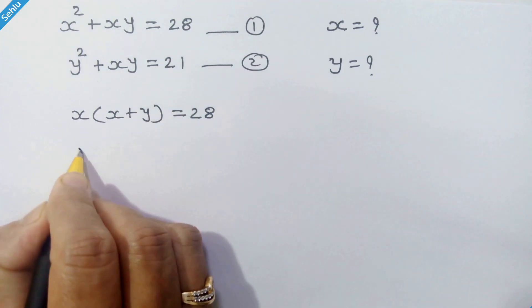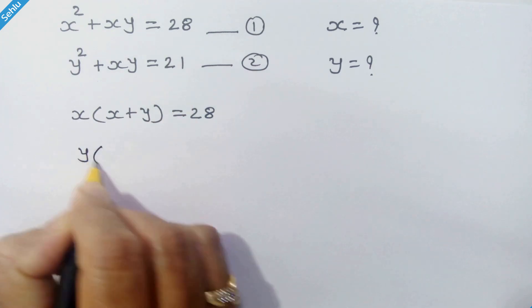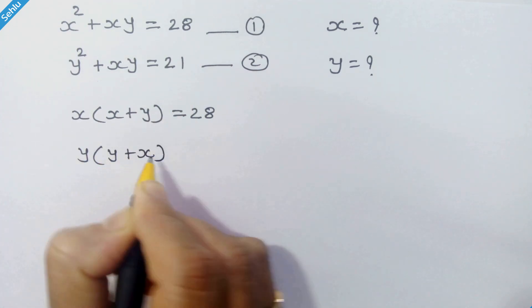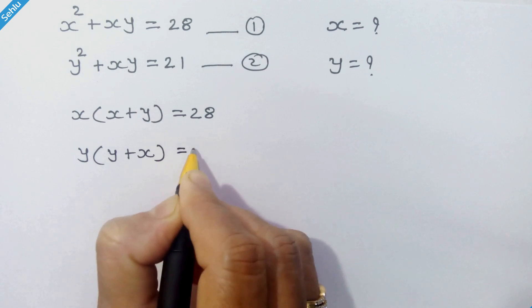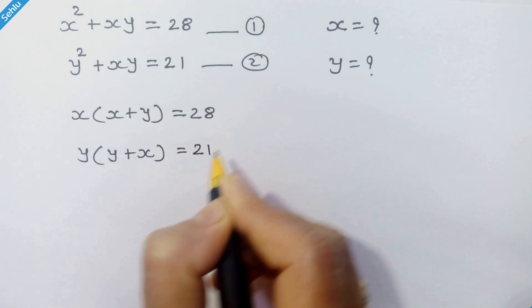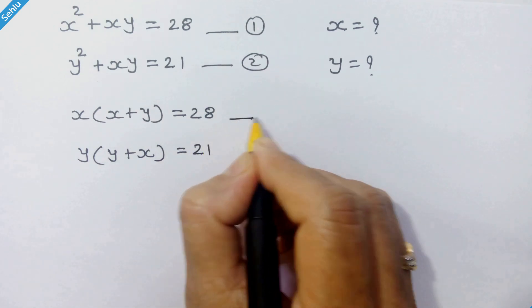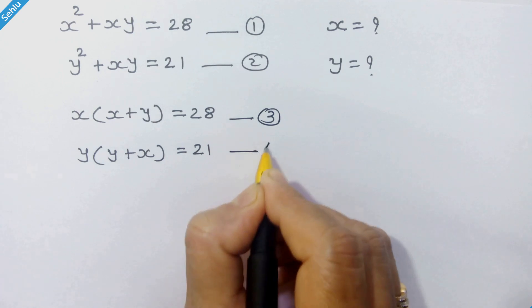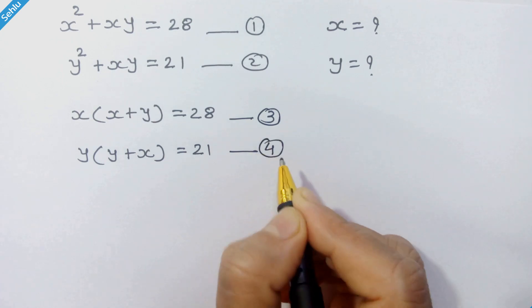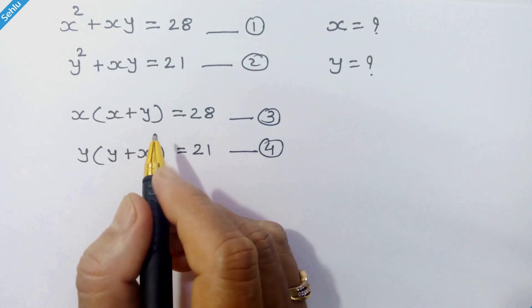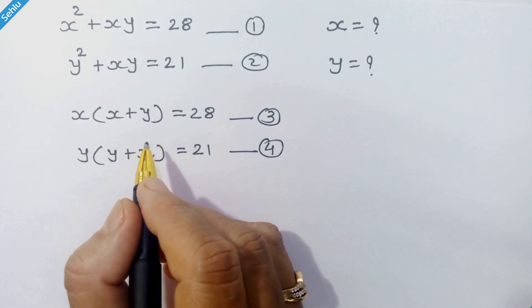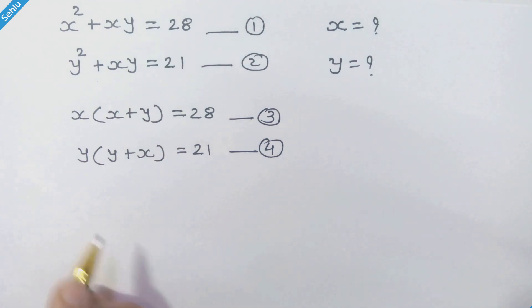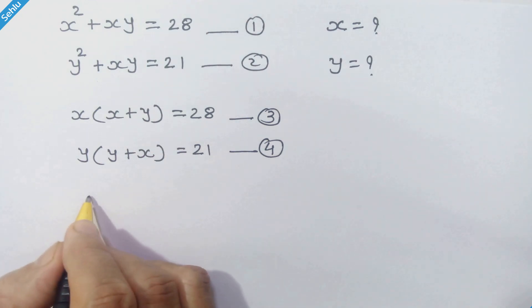In the same way, we will take y common from equation 2, so we have y times (y plus x) is equal to 21. Let's call them equation 3 and equation 4.